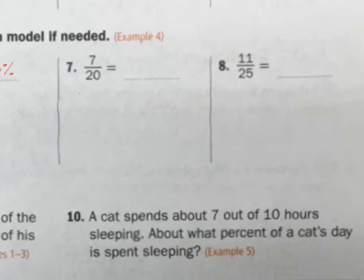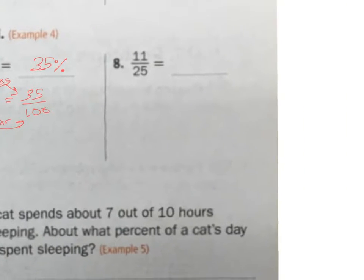Next one. 7/20. I'm going to get that bottom to be 100. The way I do it is times 5. And if I do the same to the top and bottom, I'm all good. 7 times 5 is 35. So 7/20 is the same as 35 over 100. And because it's out of 100, it is 35%.